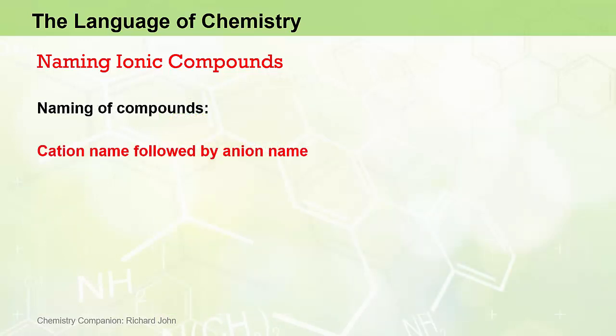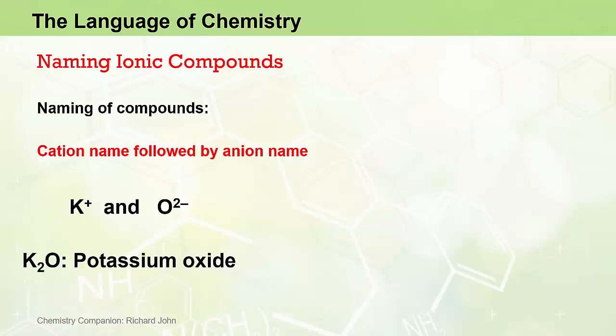In terms of naming the compounds formed from combinations of these ions, we name the cation first, followed by the name of the anion. For example, if a potassium ion and an oxide ion come together to form an ionic compound, we can use the crisscross method to get the chemical formula K2O. The name is simply potassium oxide. The K+ ion is a type 1 metal cation and is therefore named the potassium ion — no Roman numerals required. The O2− ion is named the oxide ion, so the compound is potassium oxide.